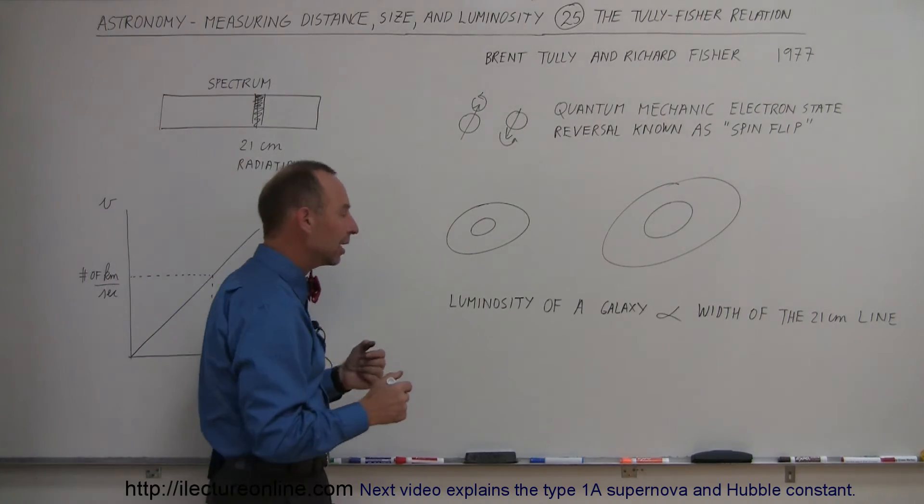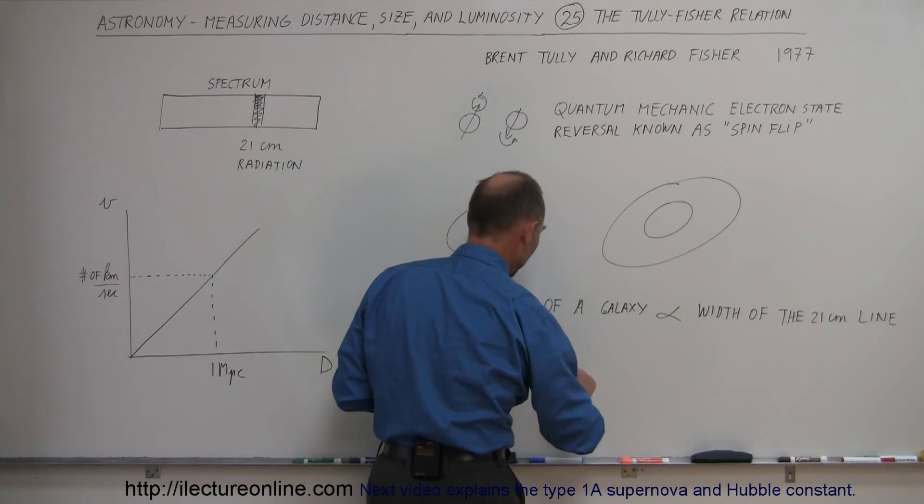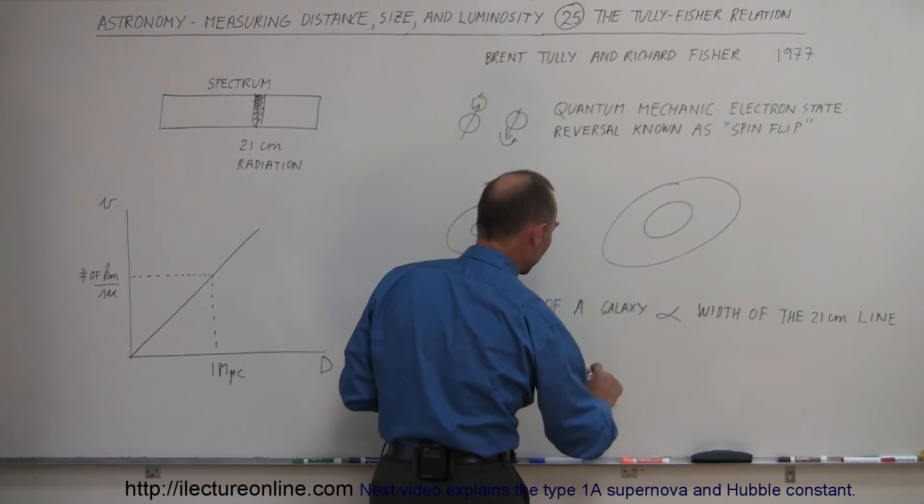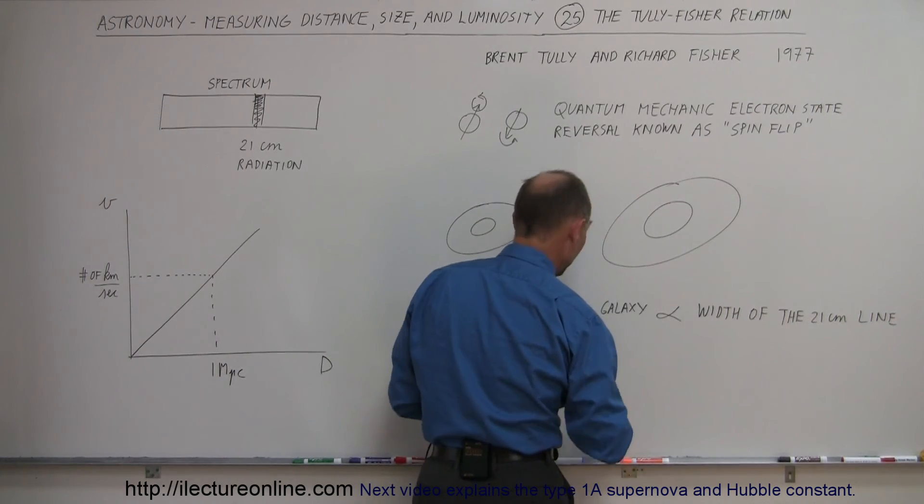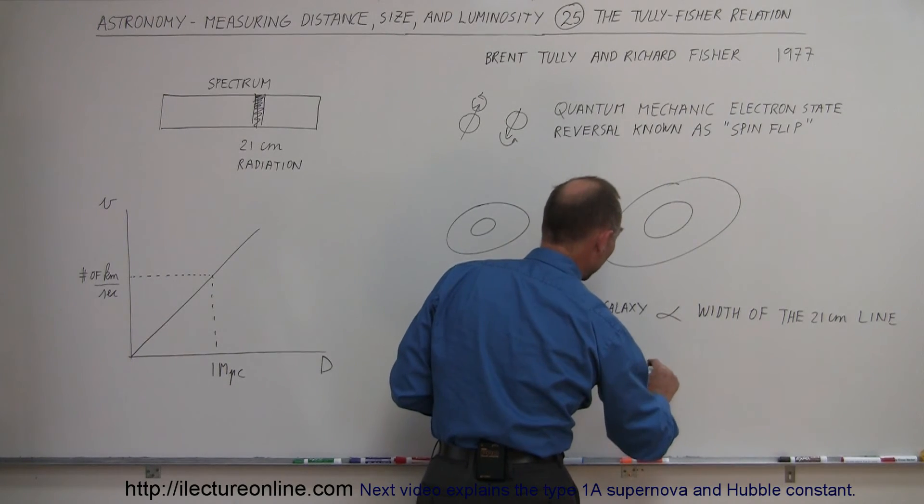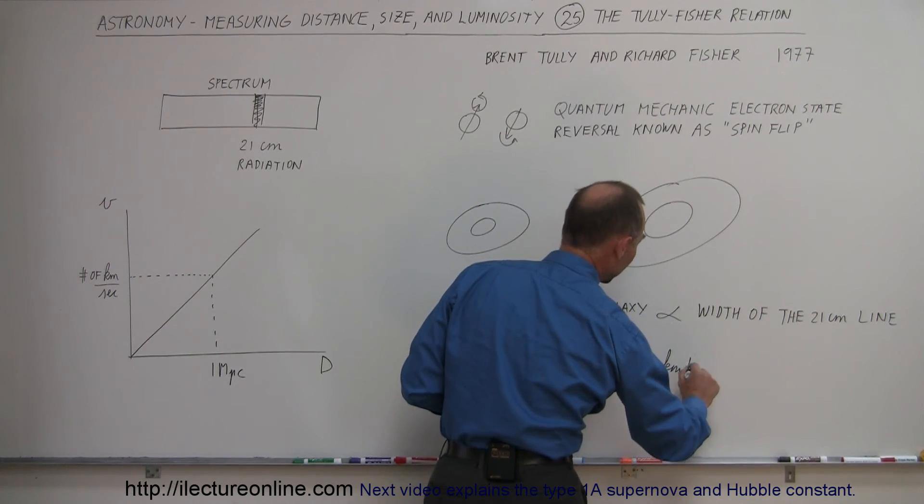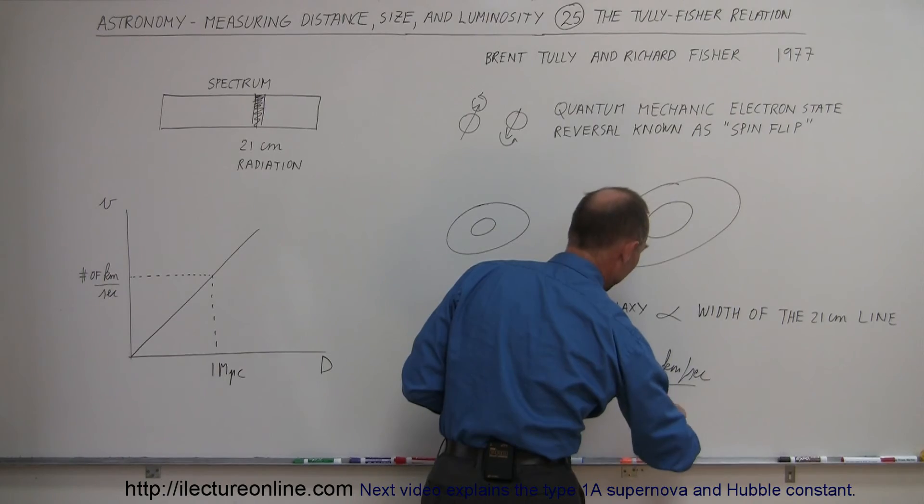they found that in their estimation, the Hubble constant was somewhere between 80 to 100 kilometers per second per megaparsec.